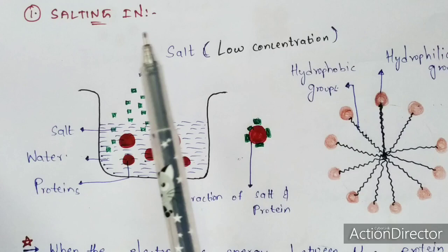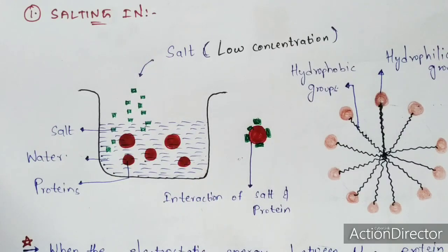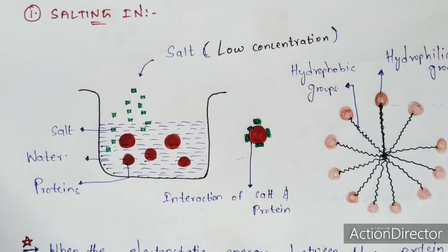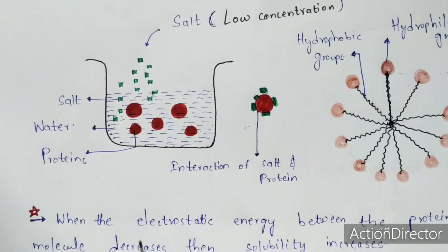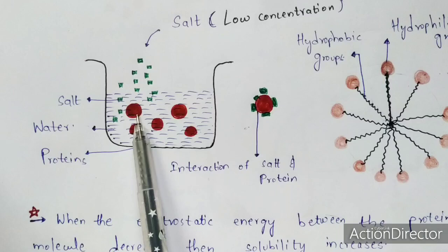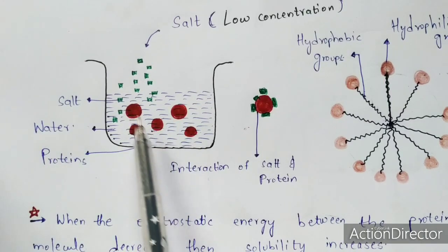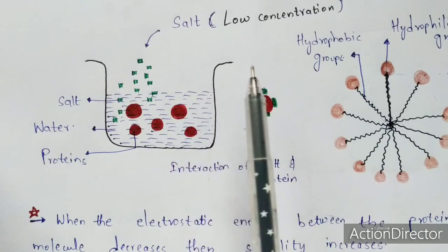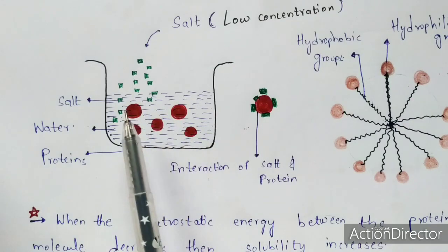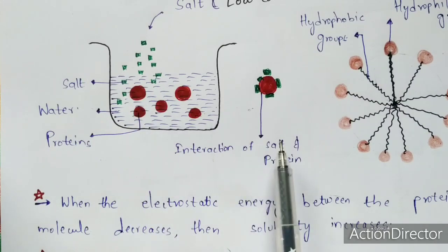This is the major difference between salting in and salting out: in salting in, low concentration of salt is used; in salting out, high concentration of salt is used. When salt is induced in low concentration into the beaker containing proteins and water, then the interaction of salt and proteins occurs. This happens because the electrostatic energy present between the protein molecules decreases when salt is added at low concentration. As this electrostatic energy decreases, the solubility increases, and the salt gets attracted towards the proteins — hence interaction of salt and protein occurs.